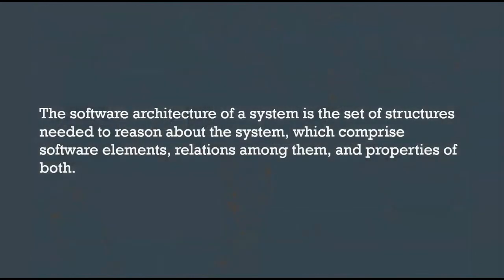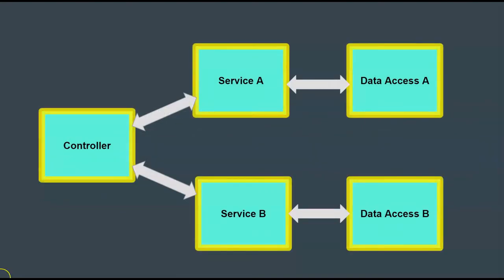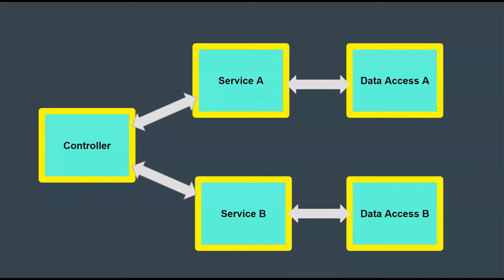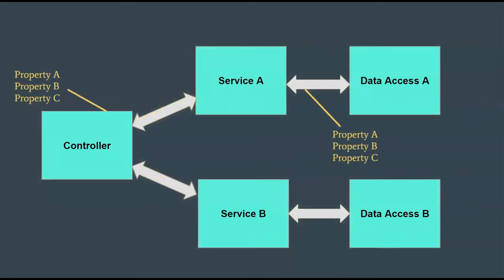This is the definition I'm going to use. The software architecture of a system is the set of structures needed to reason about the system, which is comprised of software elements, the relations among them, and the properties of both. So a software system that has a set of structures, like this one as an example, has components, and we can determine what the nature of these components are, and what their responsibilities are, what the connections are, and the significance of the connections.